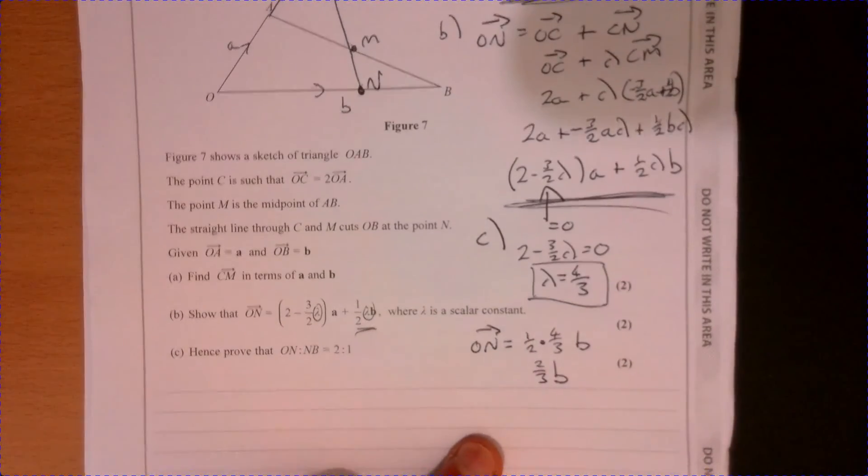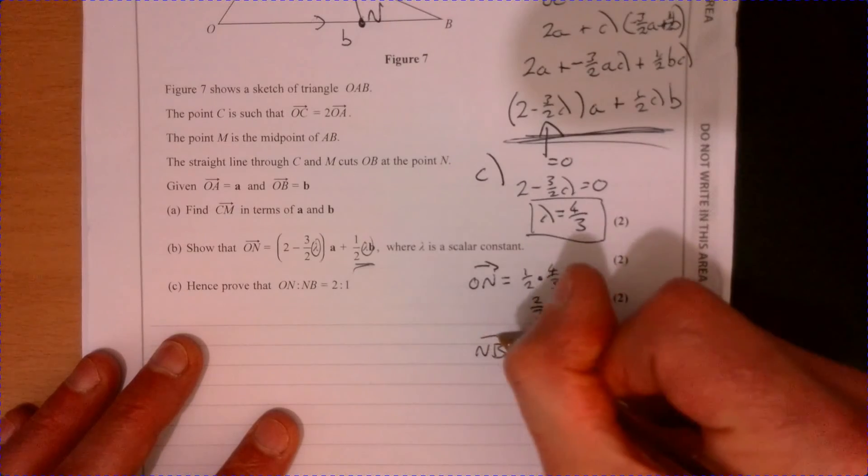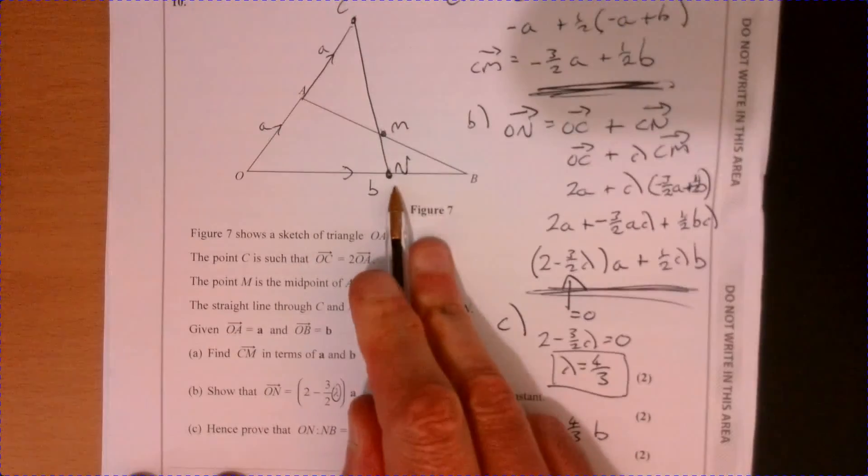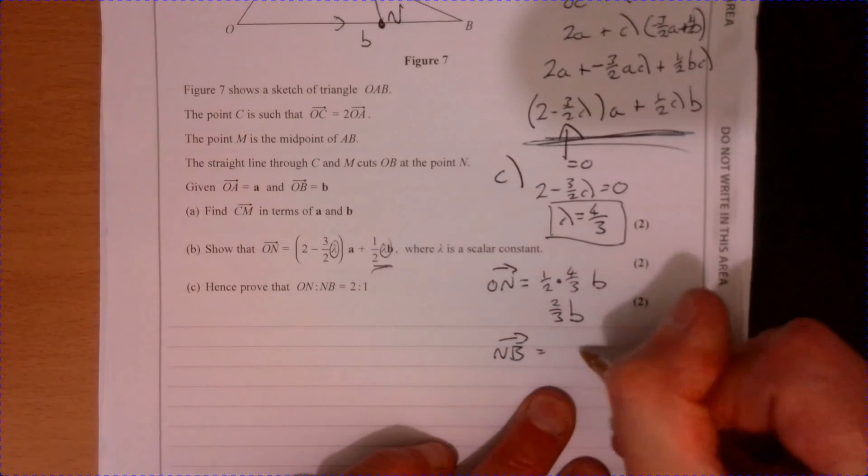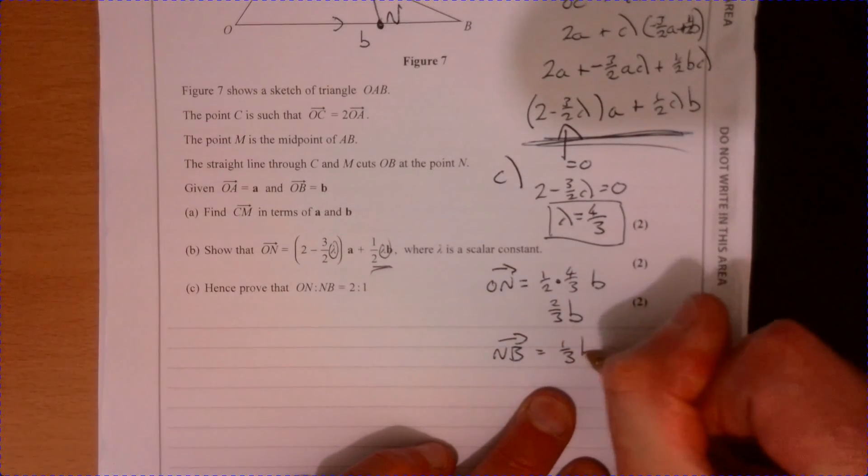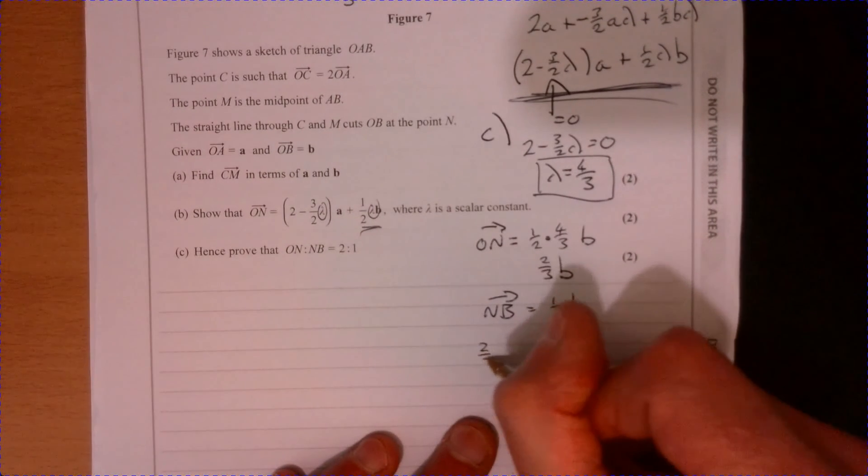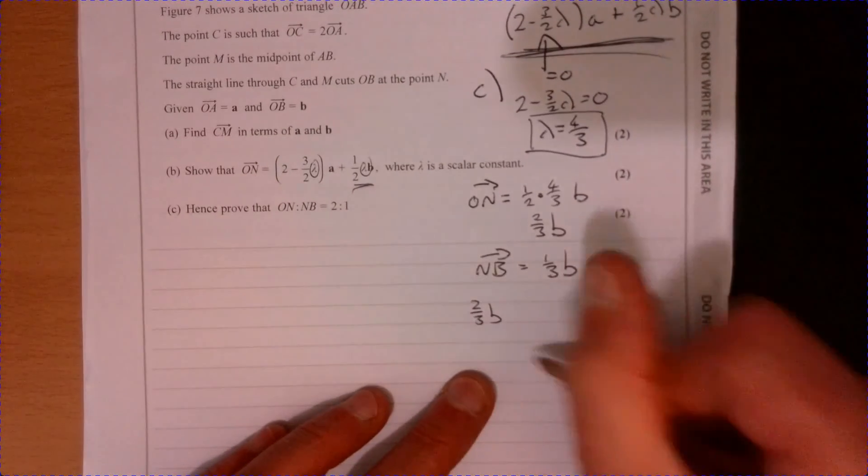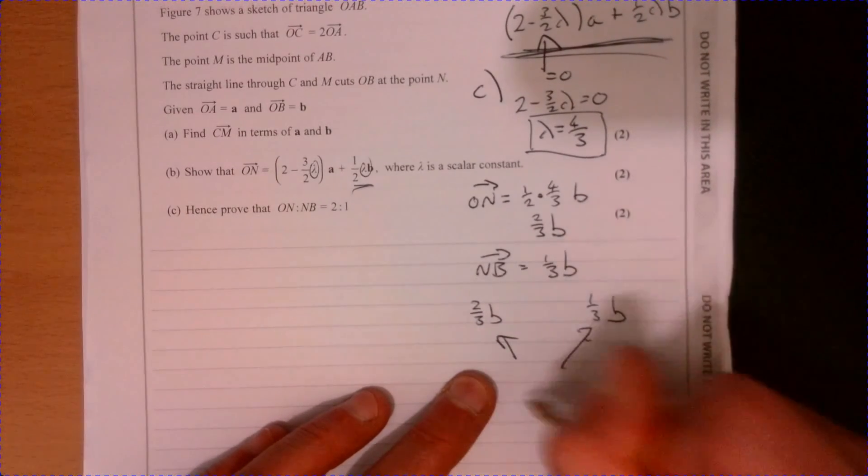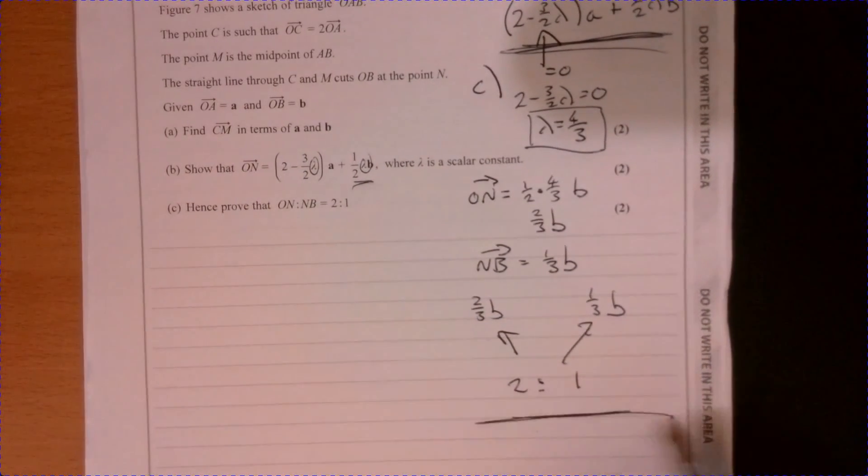I should also be able to tell you now that NB, so remember the whole thing's b, so therefore that must be one third of b. So two thirds of b, one third of b, so in ratio terms that's twice as big as that one. There we are.